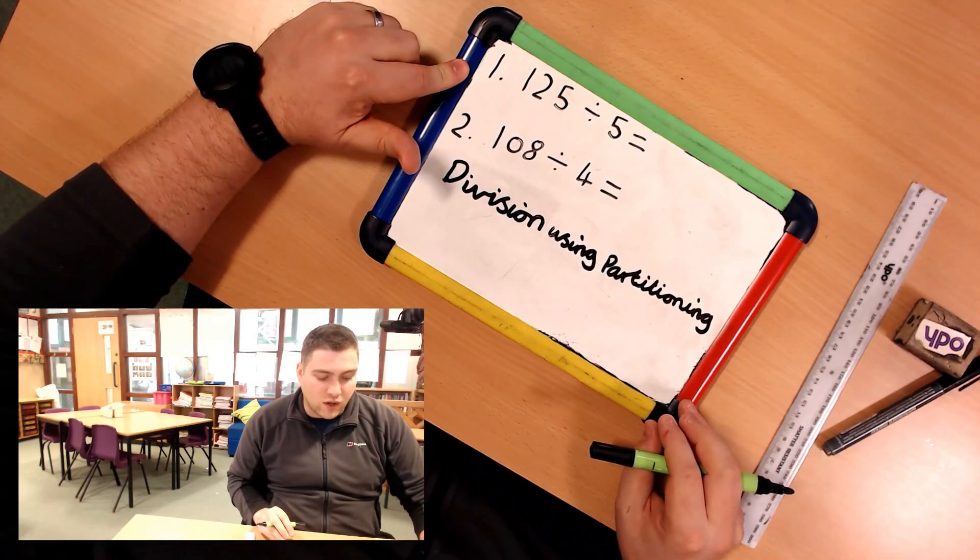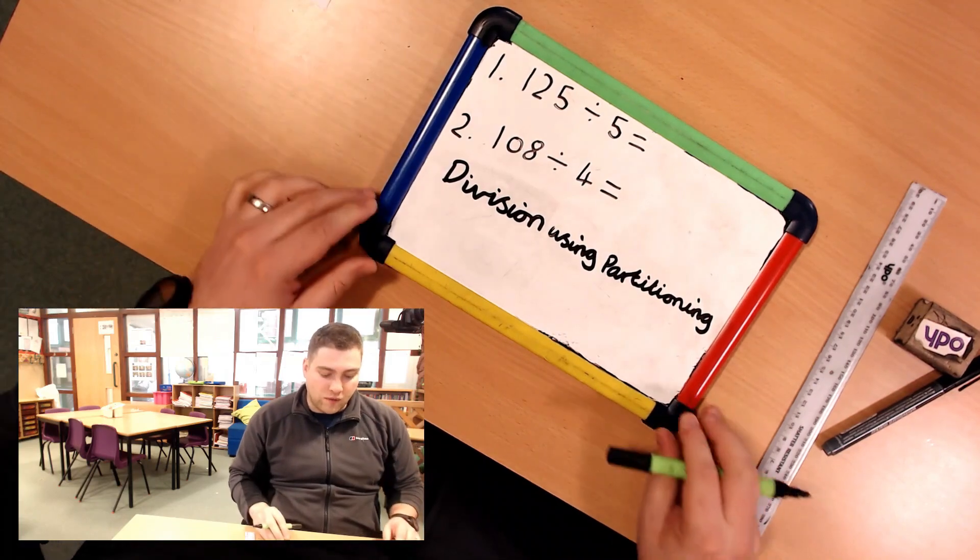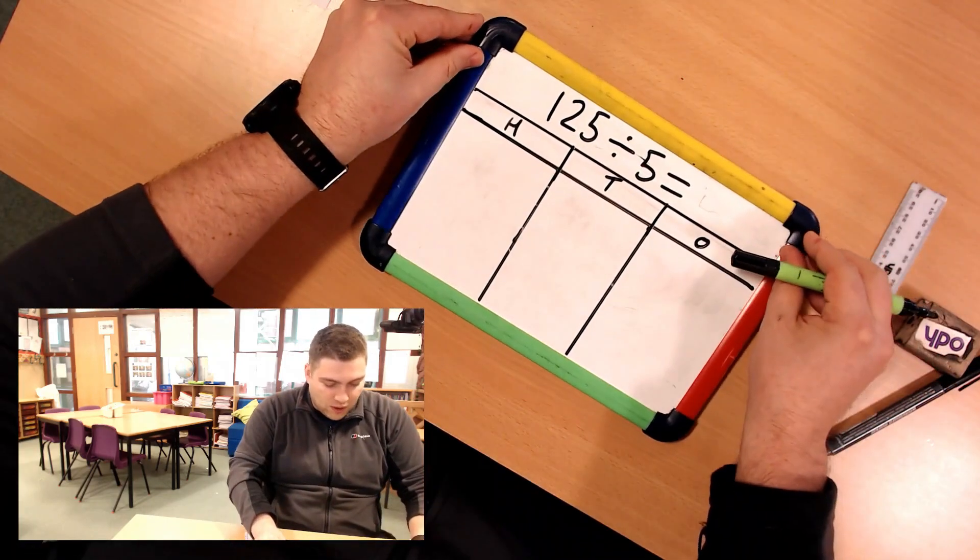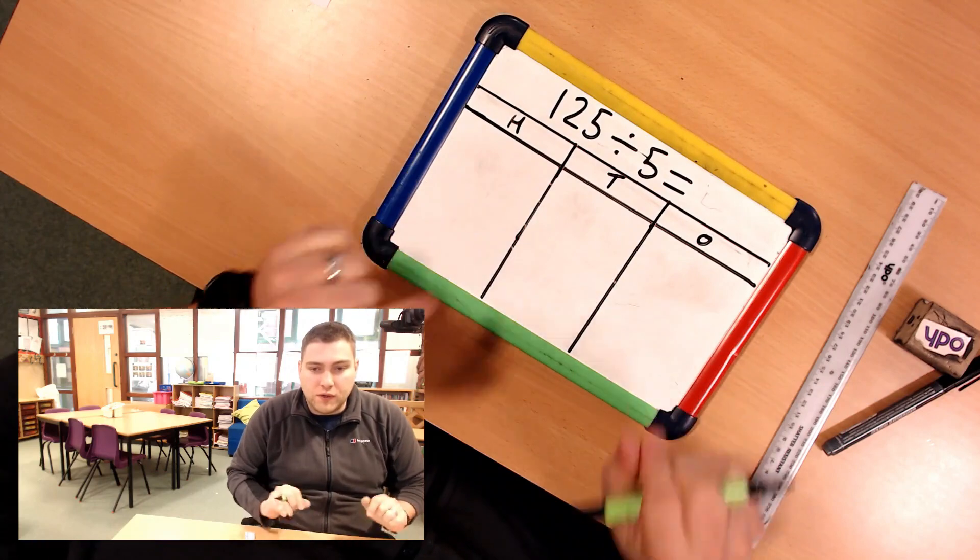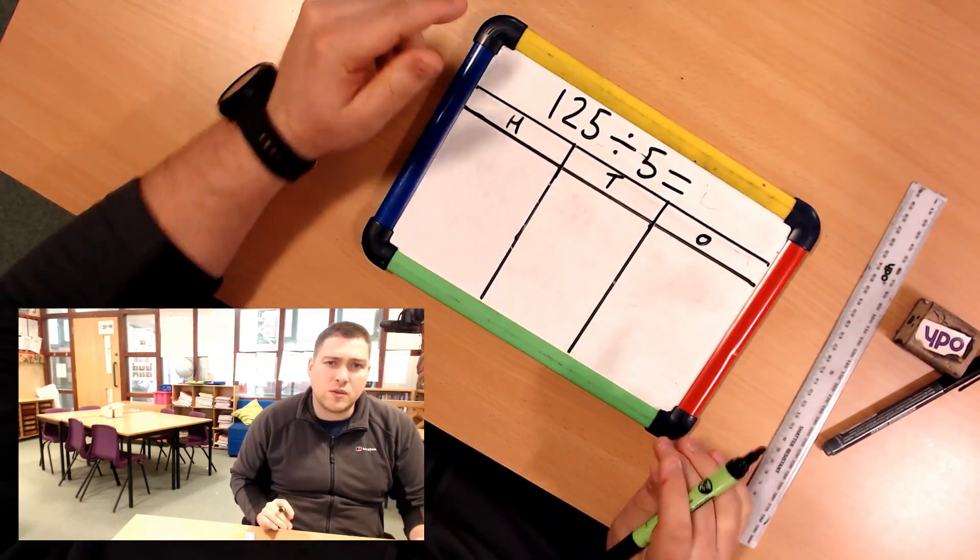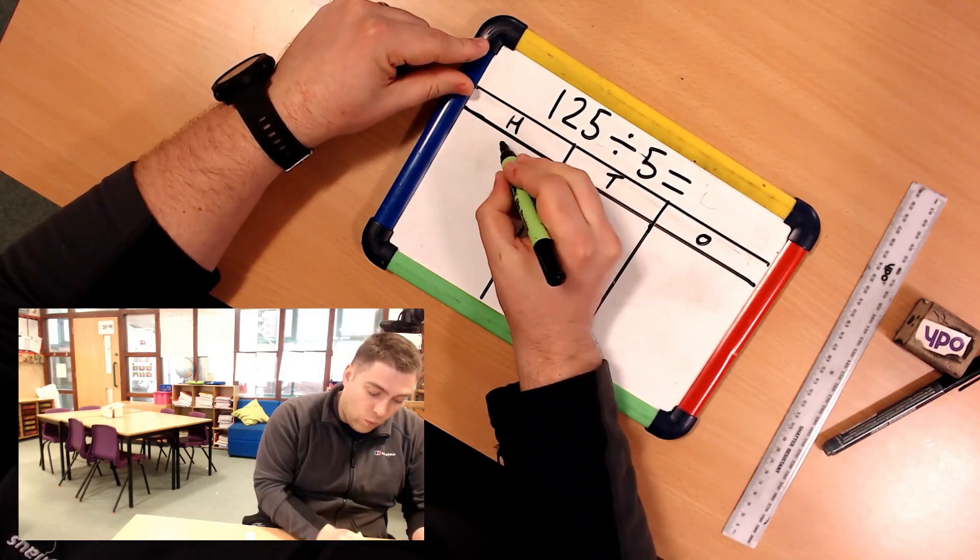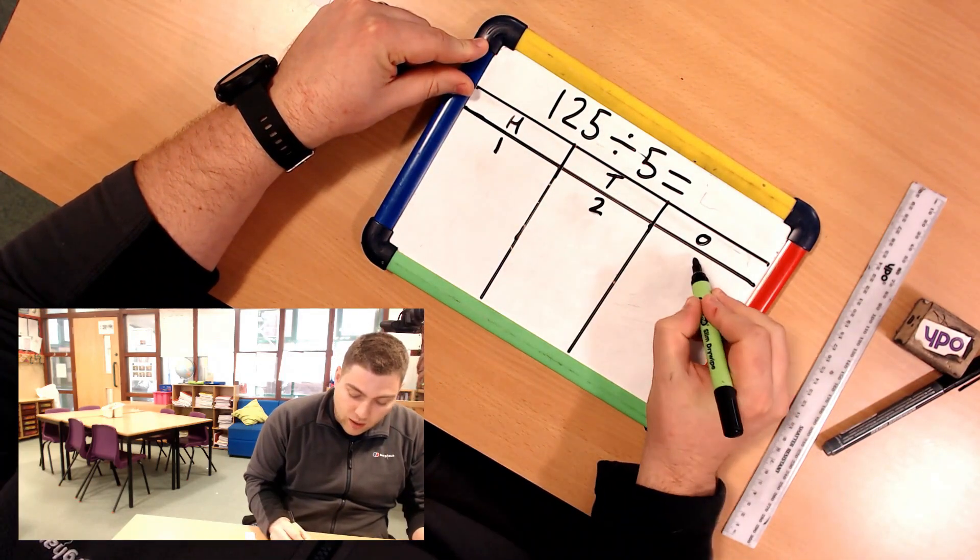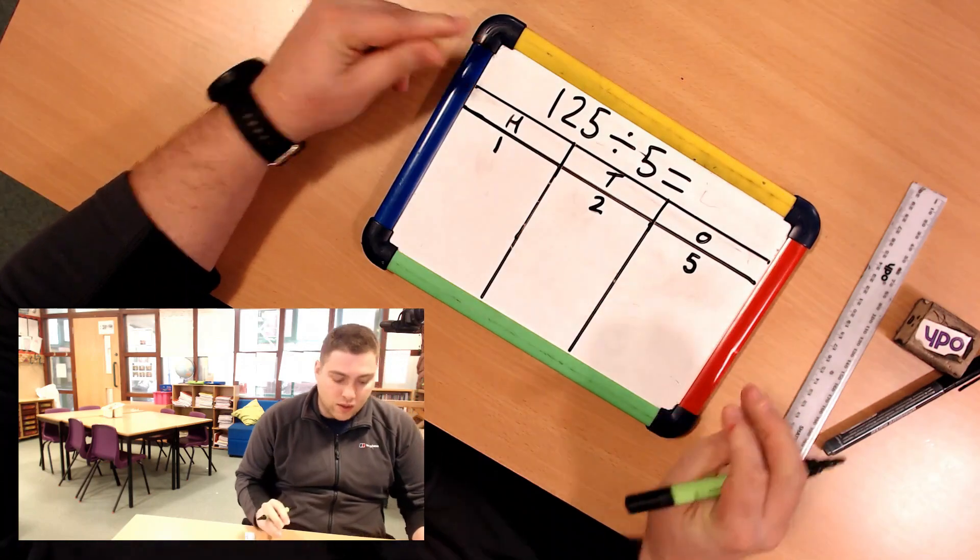Okay, question one, we're going to have a look at 125 divided by 5. So if I flip my board over, I've already got my place value grid and my question written. So what does 125 mean? It means that we've got 100, it means that we've got two 10s and that we've got five 1s.